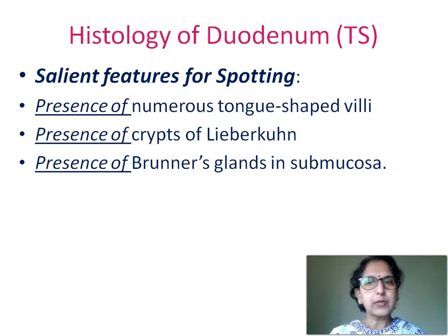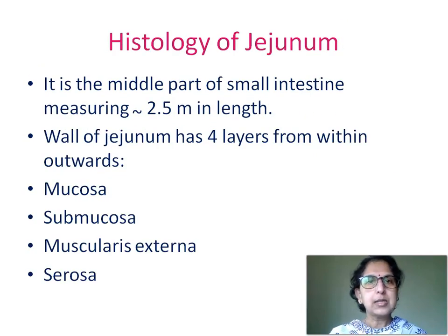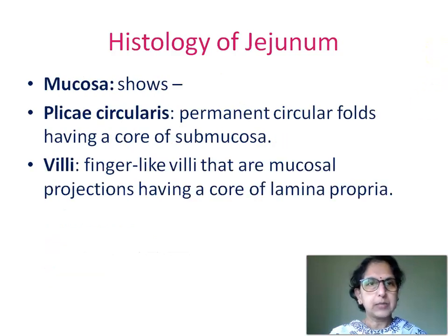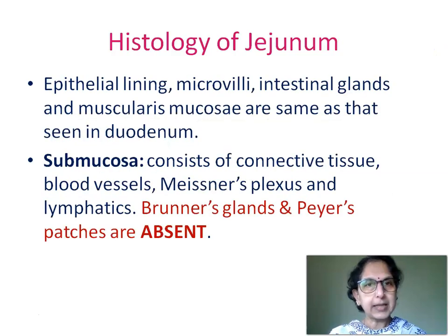After this quick review of histology of duodenum, let us now go on to histology of jejunum. This is the middle part of the small intestine, measuring approximately 2.5 meters in length. The wall of jejunum has four layers from within outwards: mucosa, submucosa, muscularis externa, and serosa. Mucosa shows plicae circulares — permanent circular folds having a core of submucosa. Villi here are finger-like, mucosal projections having a core of lamina propria. The epithelial lining, microvilli, intestinal glands, and muscularis mucosae are the same as seen in duodenum.